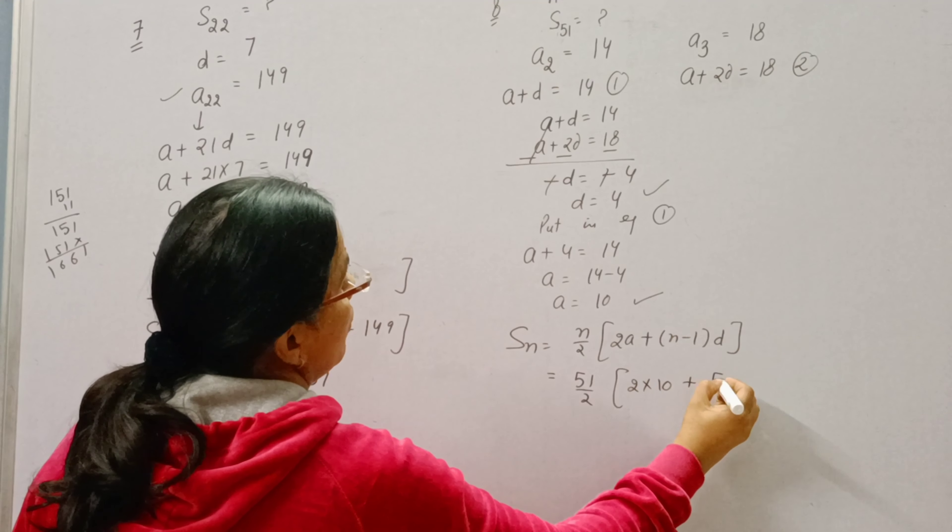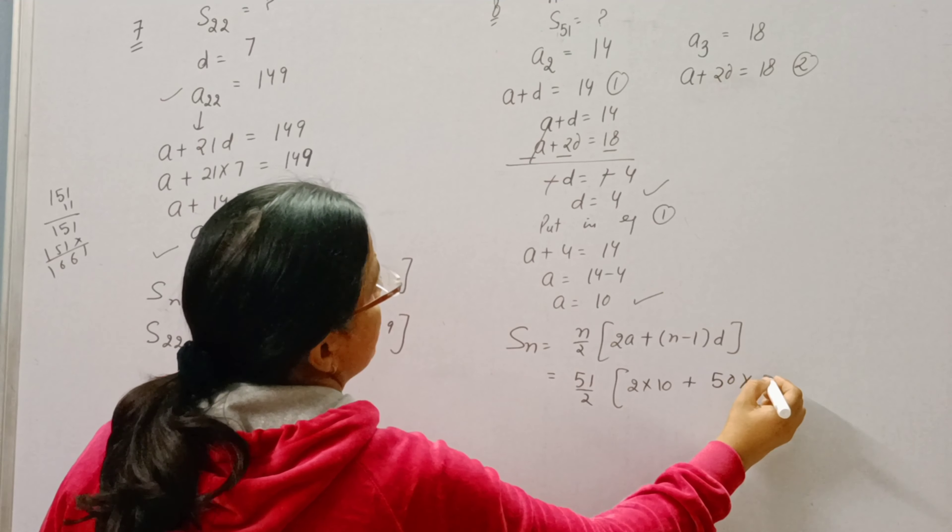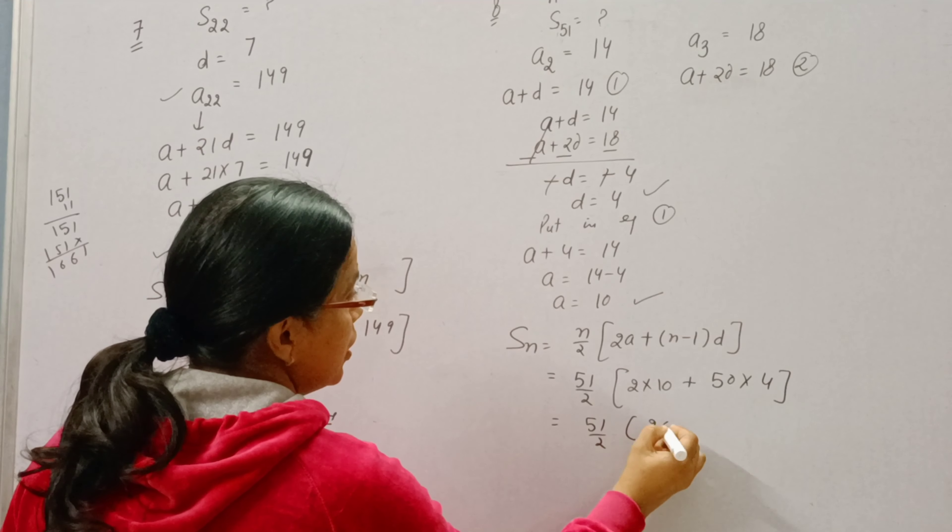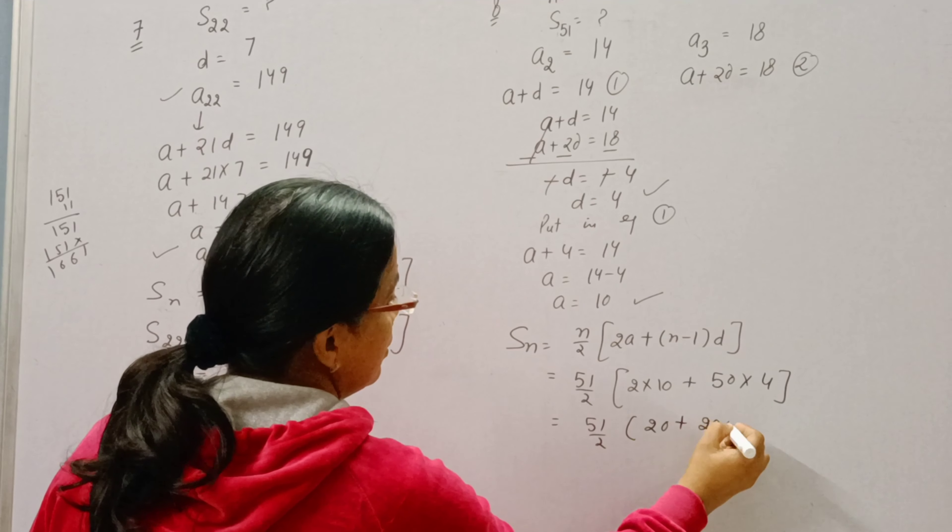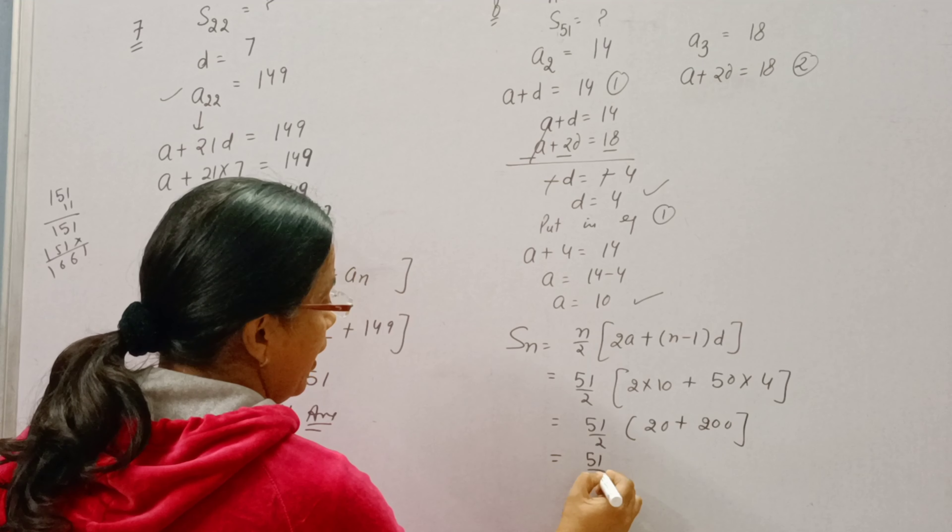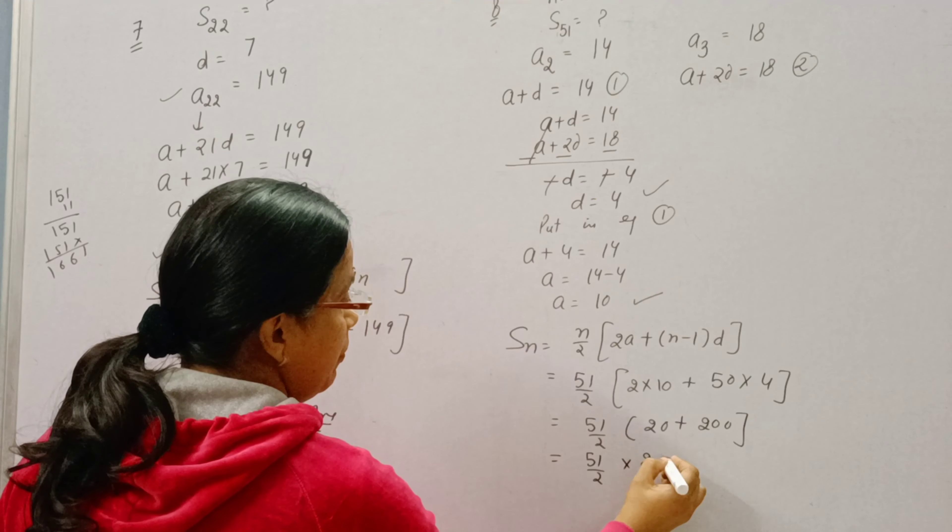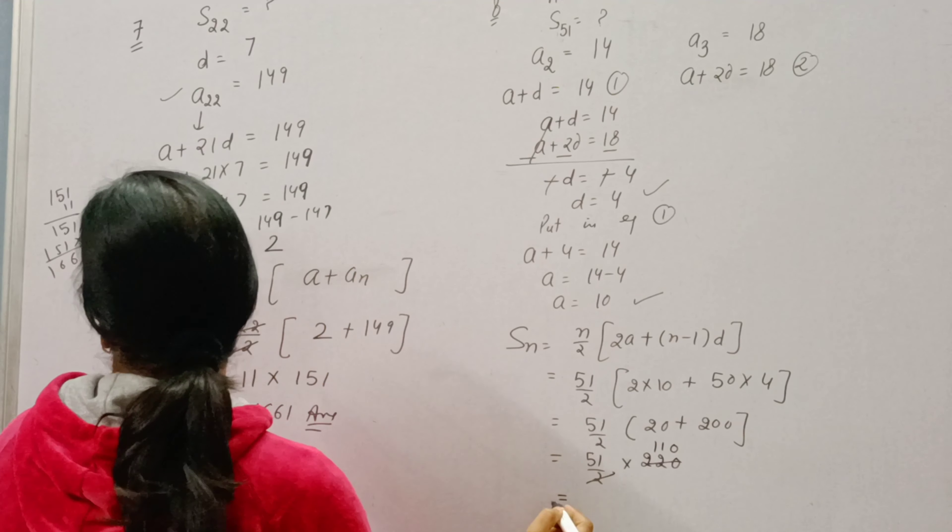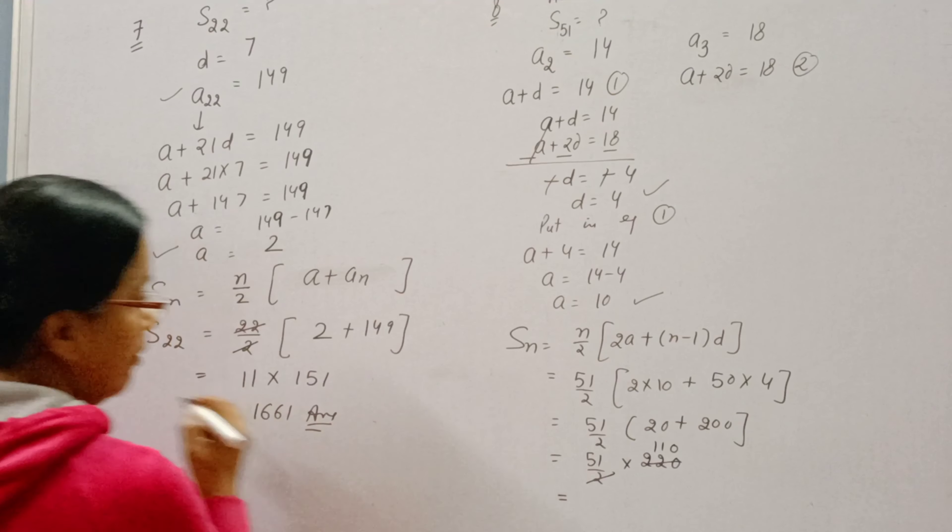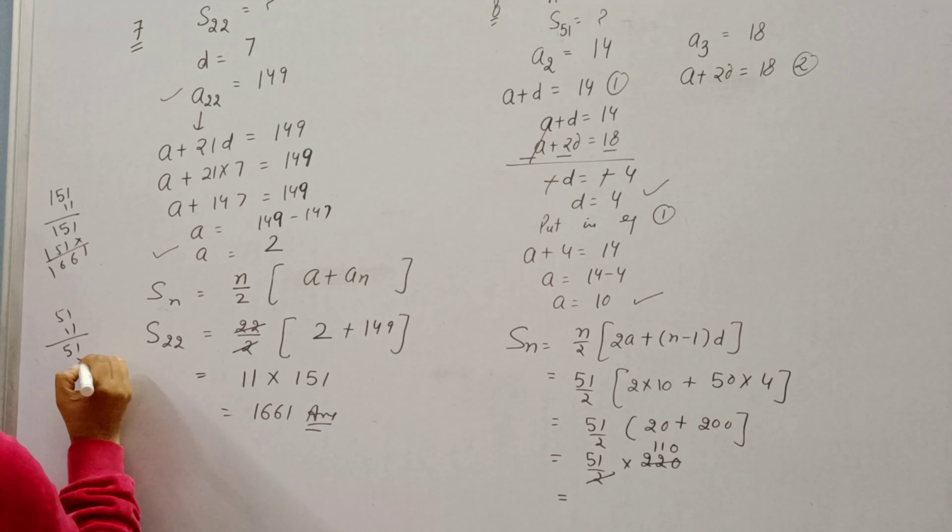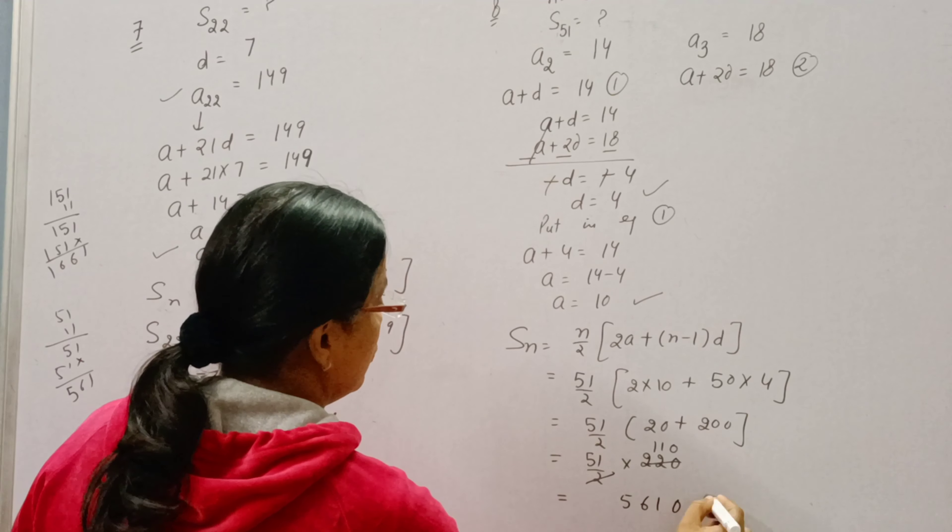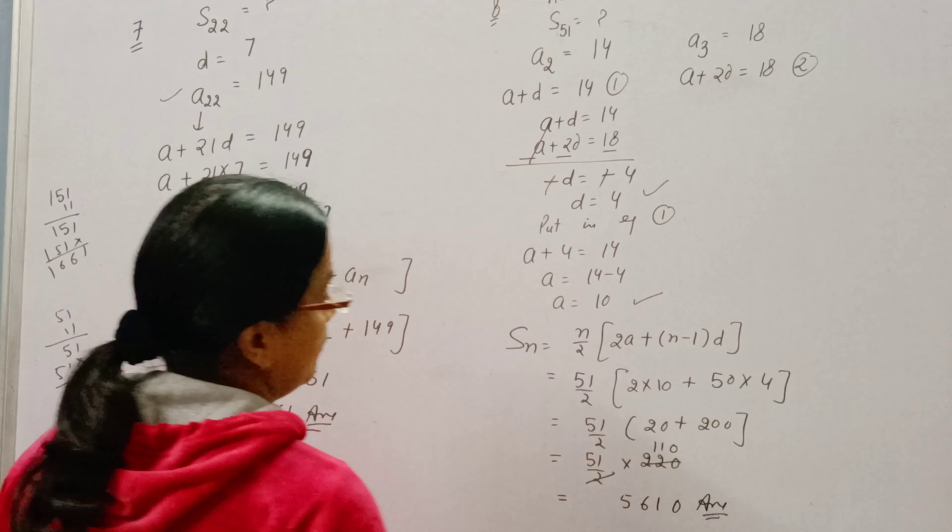Now N is 51, 51 minus 1 is 50, and D is 4. So 51 by 2, 10 into 20, it will become 220, 2 times 11, 51 into 11. So we will multiply it. 5610 is the answer. Okay.